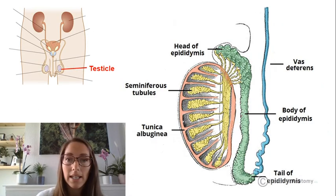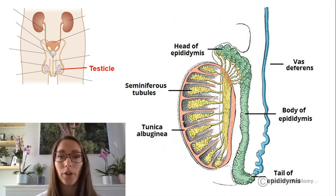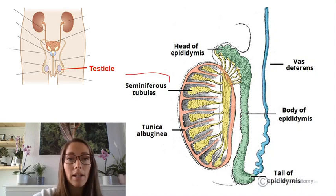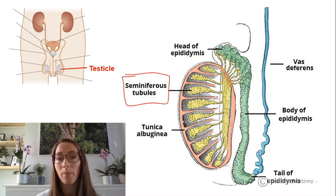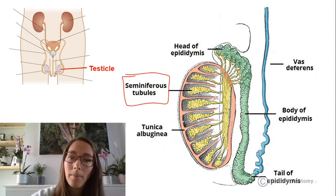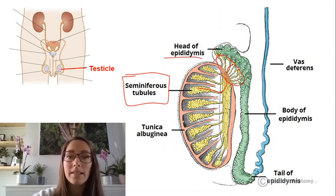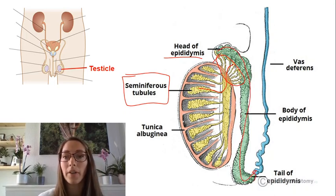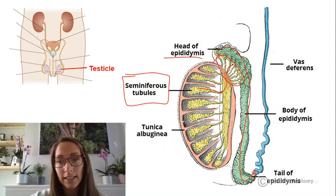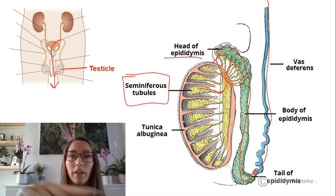If we zoom in on the testicle and look at a cross section, we can see some other really important structures. The first one is the seminiferous tubules — this is the exact location of spermatogenesis, where sperm are made. The sperm then travel via the vas deferentia, a collection of about 20 tubes, into the epididymis — this big green structure — where sperm mature. Once they're mature, they are released via the vas deferens out via the urethra and out of the penis.